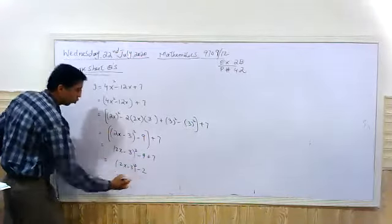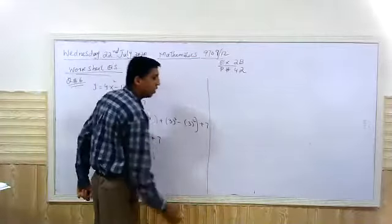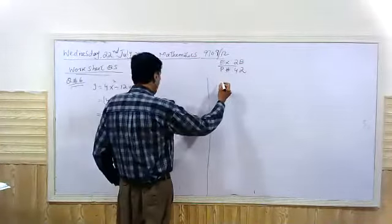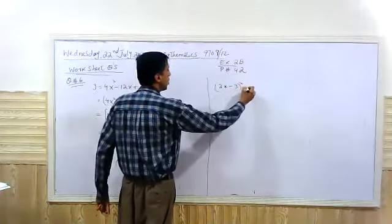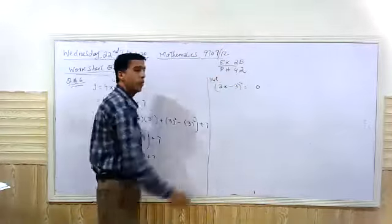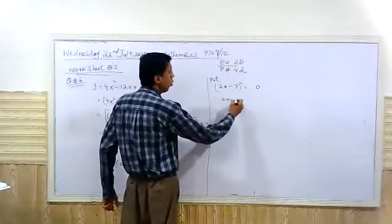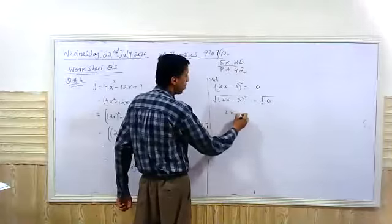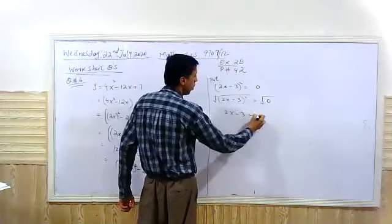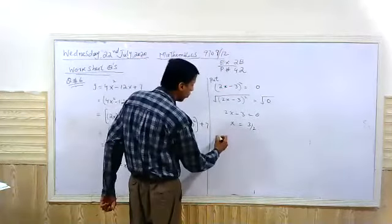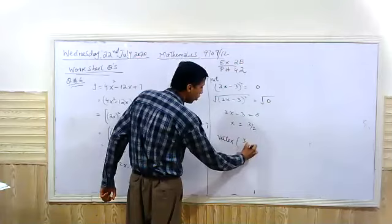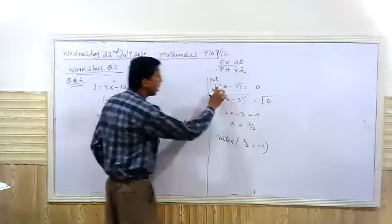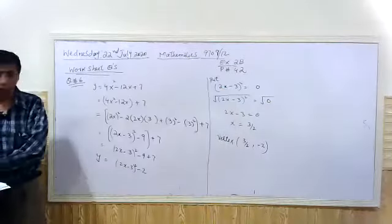That gives 2x minus 3 minus 2. Now for the sake of the vertex or the line of symmetry, keep 2x minus 3 squared equal to 0 to get the value of x. Remove the square by taking the square root of both sides — you have to show this step. So 2x minus 3 equals 0, and the value of x is 3 over 2. The vertex point would be (3/2, -2), because when 2x minus 3 equals 0, the value of y left is minus 2.